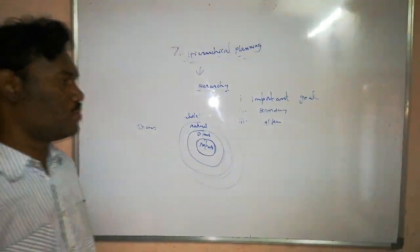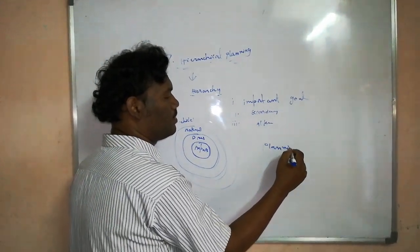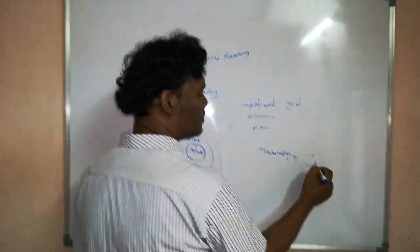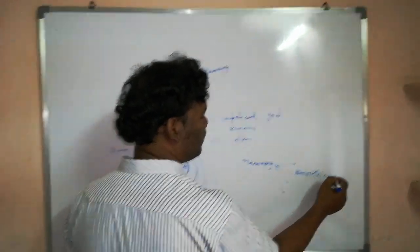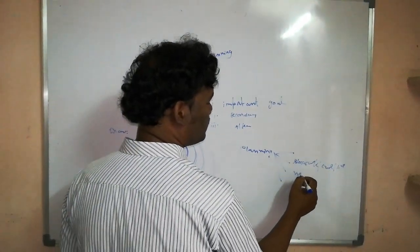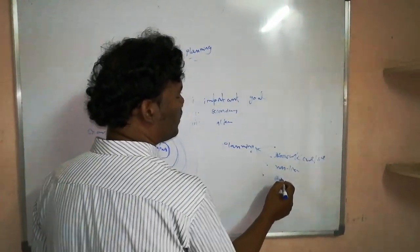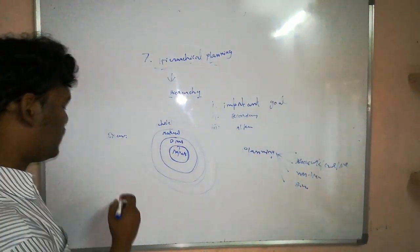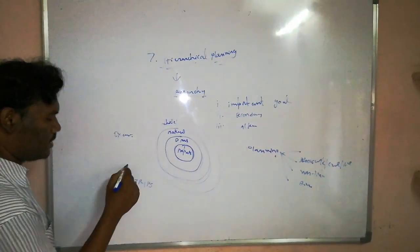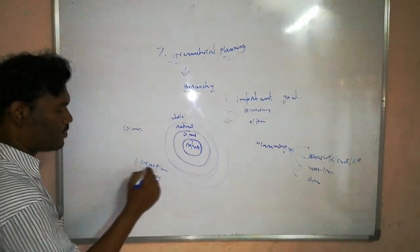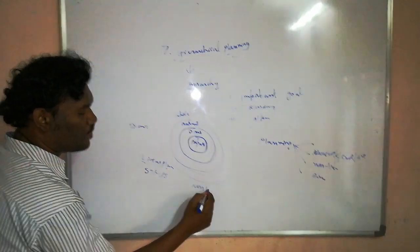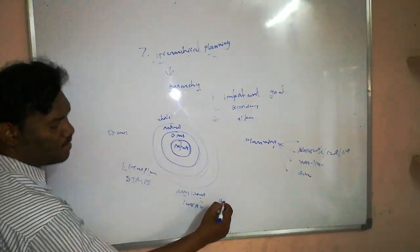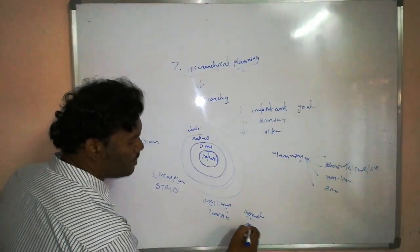To summarize the planning chapter: we study what is planning, what is the Blocks World problem or goal-step planning (linear planning), non-linear planning, and hierarchical planning. Linear planning is implemented with the STRIPS algorithm, non-linear planning is implemented with the TWEAK algorithm, and hierarchical planning is implemented with ABSTRIPS algorithm.